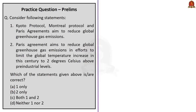Consider the following statement: Kyoto Protocol, Montreal Protocol, and Paris Agreement aim to reduce global greenhouse gas emissions. This statement is incorrect because the Montreal Protocol is not about greenhouse gas emissions — it is concerned with regulating the production and consumption of man-made ozone-depleting substances. Kyoto Protocol and Paris Agreement are about greenhouse gas emissions; Montreal Protocol is about ozone-depleting substances. Statement 2: Paris Agreement aims to reduce greenhouse gas emissions to limit global temperature increase in this century to 2 degrees Celsius above pre-industrial levels — this is correct. Therefore, the correct answer is option B: 2 only.